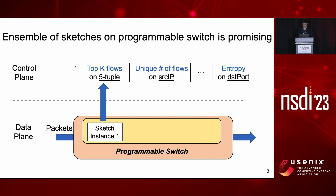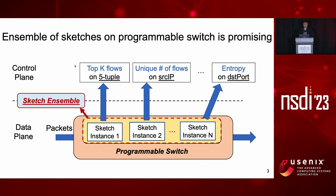Let's take a look at a practical scenario of how to deploy sketches on a programmable switch. They need to create a sketch instance to support one measurement task on the control plane. For example, sketch instance one can be configured with a sketching algorithm for top-k flows and configured with the flow key definition of five-tuple. In order to run multiple measurement tasks, multiple sketch instances must be running on the programmable switch. We call this set of sketch instances an ensemble of sketch instances, or simply a sketch ensemble. Our goal is to run this sketch ensemble on the programmable switch.